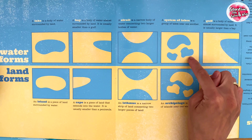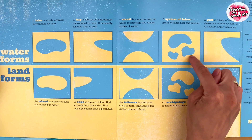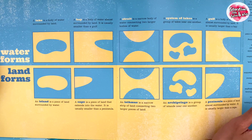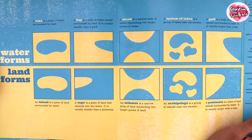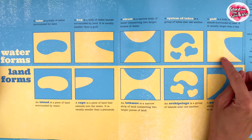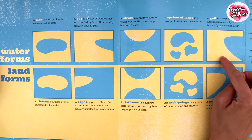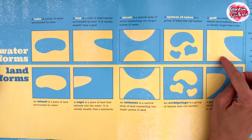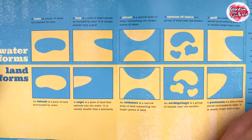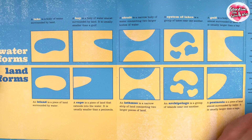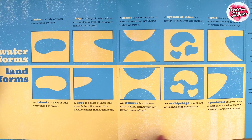A system of lakes is a group of lakes near one another. A gulf is a body of water almost surrounded by land. It is usually larger than a bay.